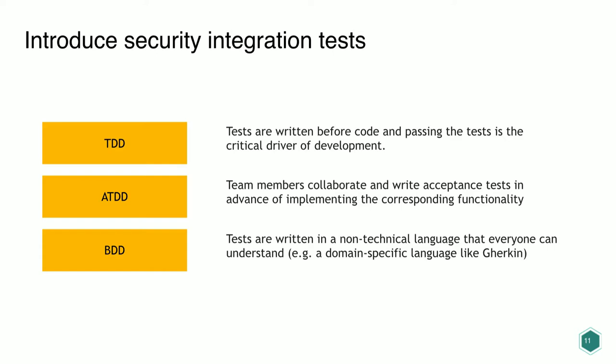So how can we improve this? In this talk we'll see how to build security integration tests and embed them in the CI/CD. We have different kinds of tests: Test-Driven Development where tests are written before coding, Acceptance Test-Driven Development where team members collaborate to write tests on functionality, and BDD — Behavior-Driven Development — where tests are written in a non-technical language that everyone can understand, filling the communication gap between developers, security, and business.